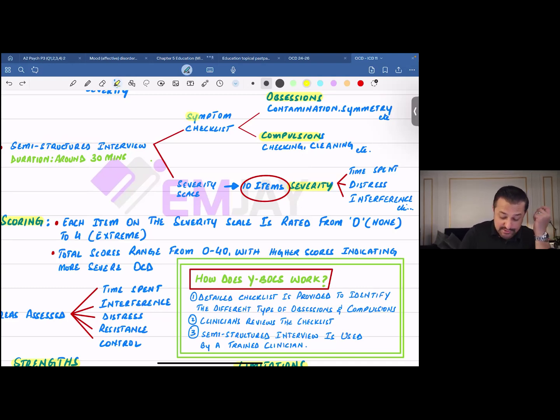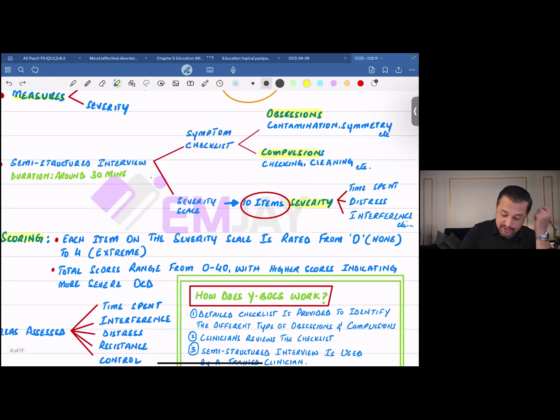We had spoken about a symptom checklist. Through this symptom checklist, an individual's obsessions or the nature of their obsessions is measured, and along with that, the nature of compulsions is noted as well.